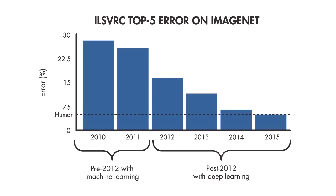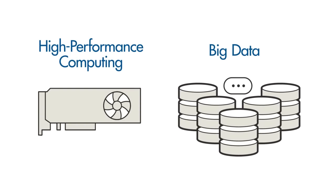First, deep learning methods are now more accurate than people at classifying images. Second, GPUs enable us to train deep networks in less time. And finally, large amounts of labeled data required for deep learning have become accessible over the last few years.